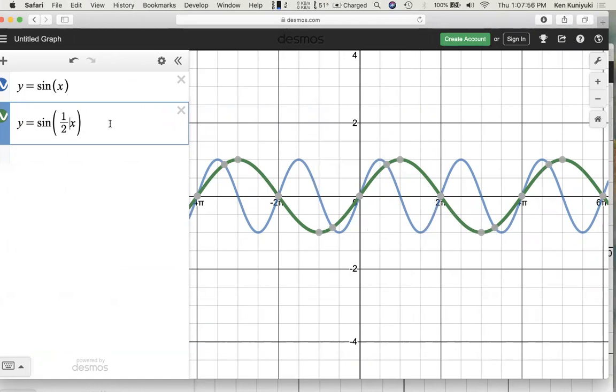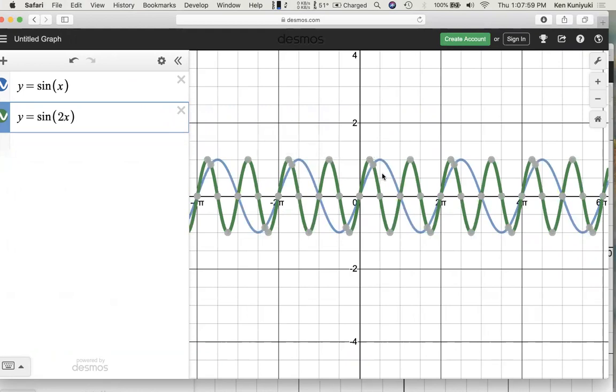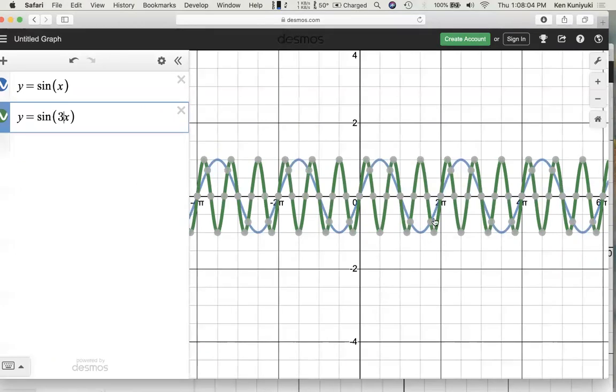So again, if we have y equals sine of 2x, we have two cycles where there used to be just one. Y equals sine of 3x, we have three cycles where we used to have just one on blue.